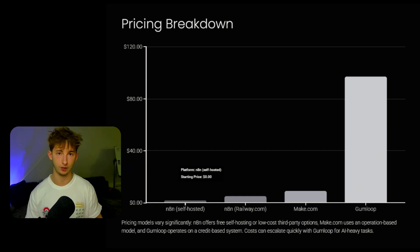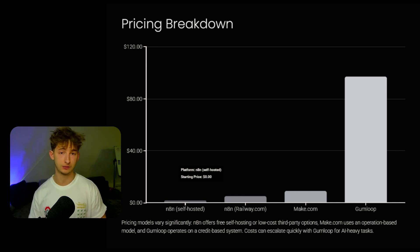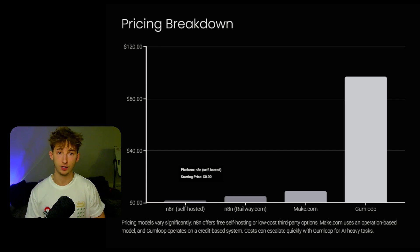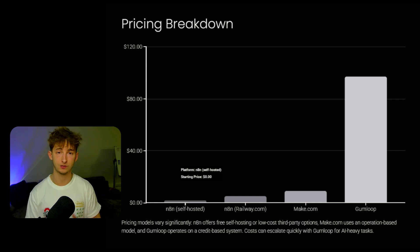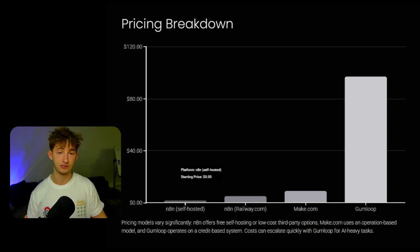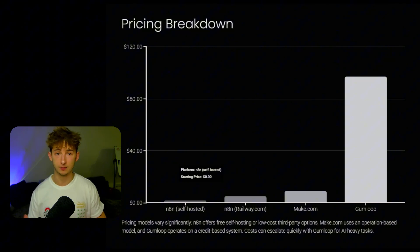Make.com starts at $9 a month and also uses an operations model, where every trigger check or data transformation counts as an operation use. It can get quite expensive once you're scaling past $9 a month — once you hit 10,000 operations, you'll start paying about $20, and it keeps going from there. With Gumloop, it similarly operates on a credit-based system starting at $97 a month, but costs can escalate quickly if you're running AI-heavy tasks like document processing or web scraping.